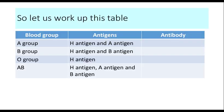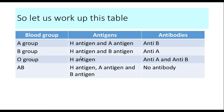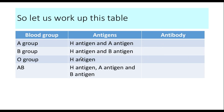An A blood group person has the H antigen and the A antigen. The B blood group has the H antigen and the B antigen. The O blood group has only the H antigens. And the AB blood group has the H antigen, the A antigen, and the B antigen. Please note that all the blood groups of the ABO system express the H antigen.